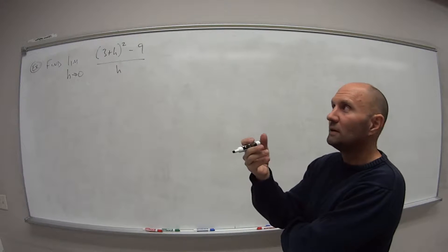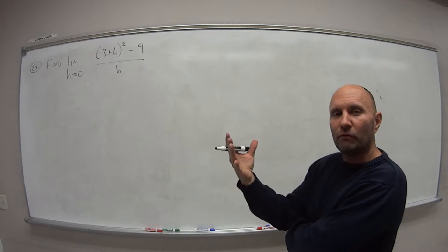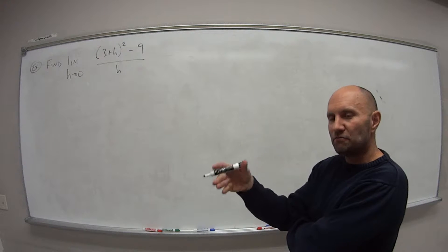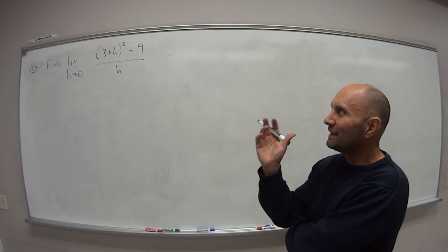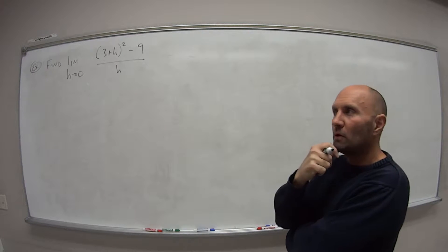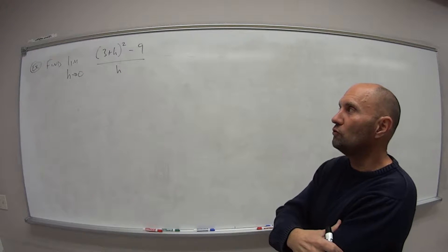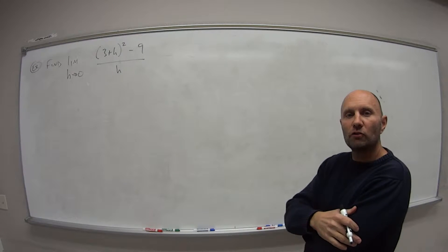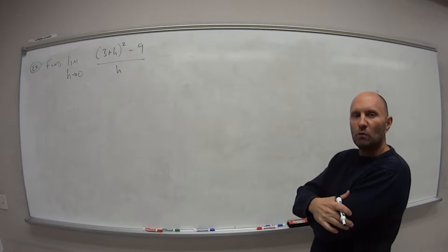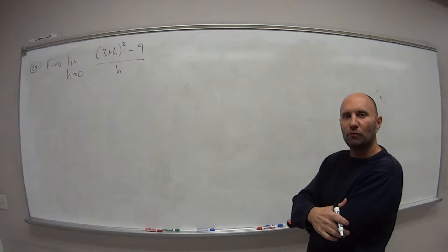So what do we try to do instead? Try to do our algebra. Expand this thing, see if we can do any canceling, any factoring, anything of that nature to get that h out of the bottom or maybe generate something else in the denominator that then would allow us to use direct substitution. So go ahead and hit pause, try that. When you come back, we'll work through it and we'll compare answers, see if we got the same thing.